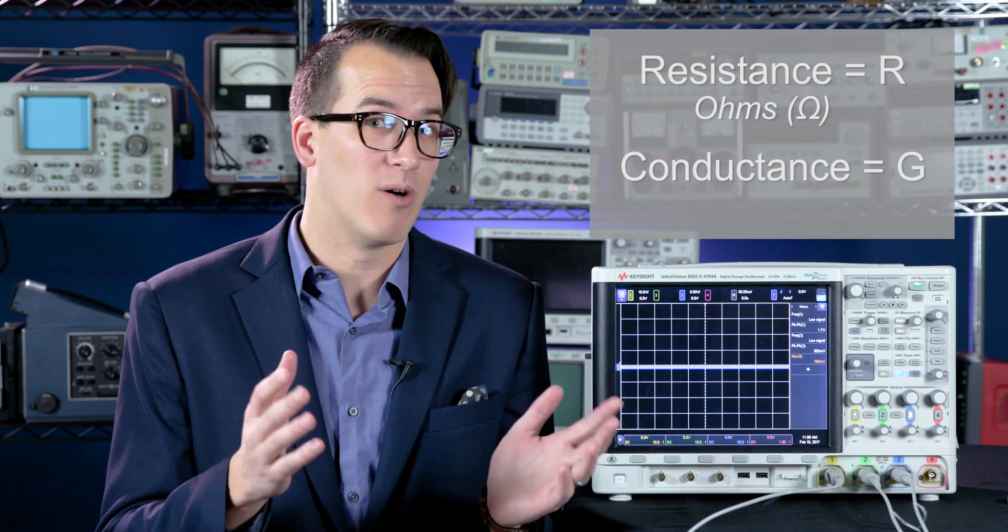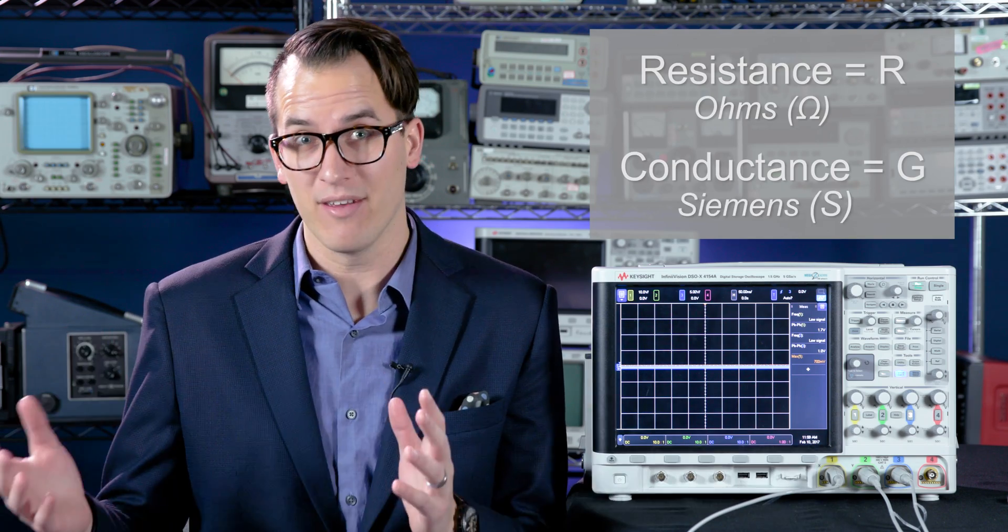Resistance we measure in ohms and conductance we measure in siemens, and they're actually inversely proportional to each other. An interesting side note is that one ohm actually equals one siemens.